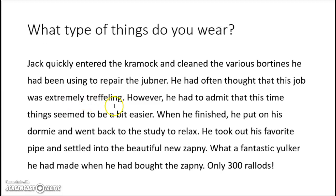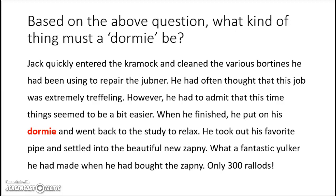What type of things do you wear? Maybe this one was a little bit more difficult, but we can look at this sentence: when he finished, he put on his dormi and went back to the study to relax. So he put on his dormi — we can guess that dormi is something you can wear. Based on that, we can guess it's maybe pajamas or some kind of clothes that you relax in. You're probably not going to wear work clothes, so probably some clothes to relax in.